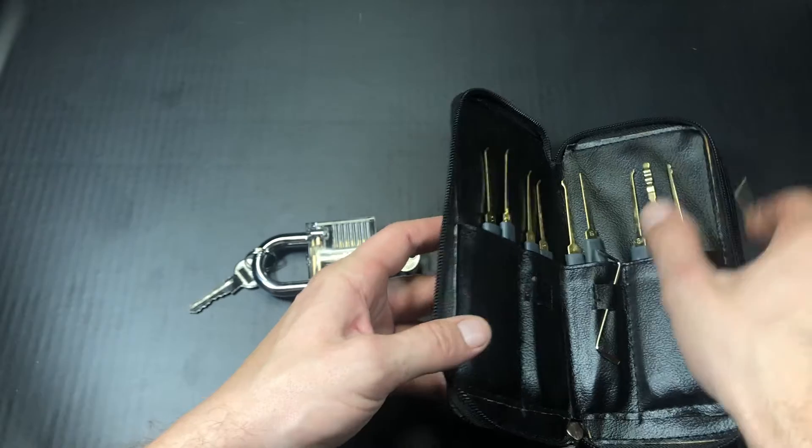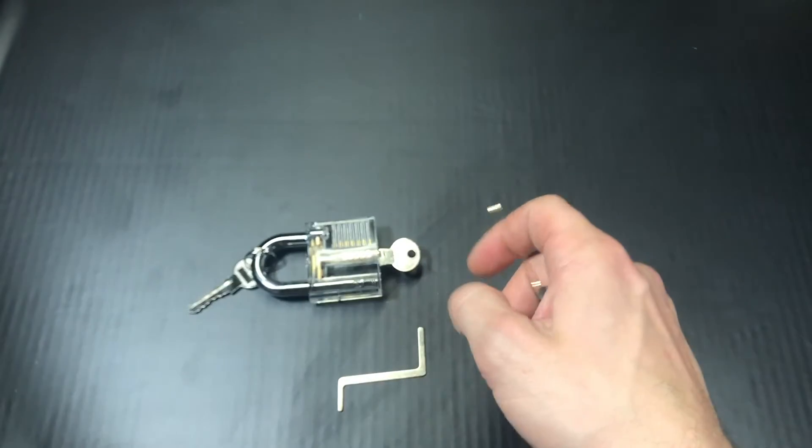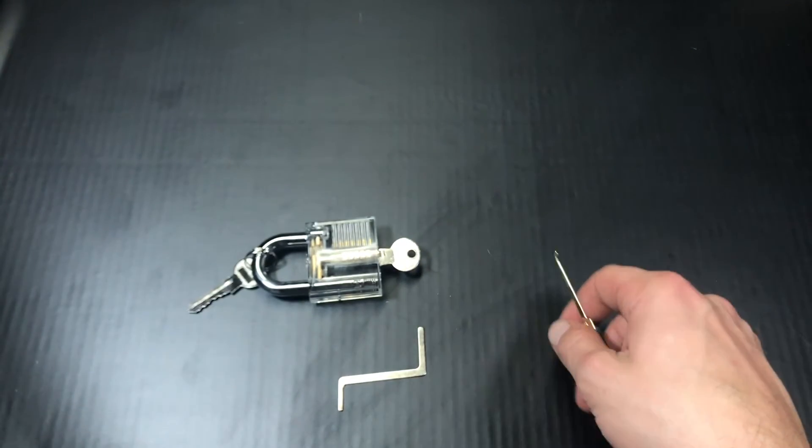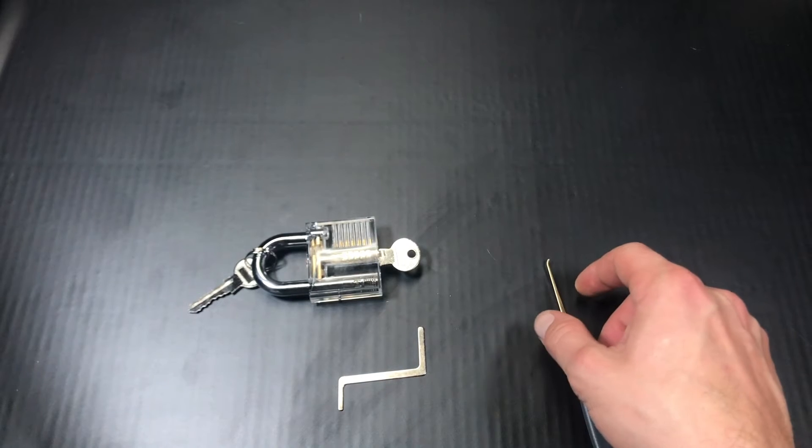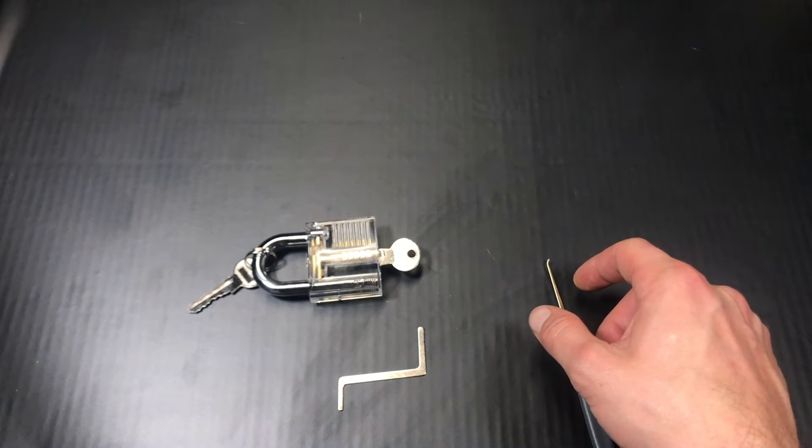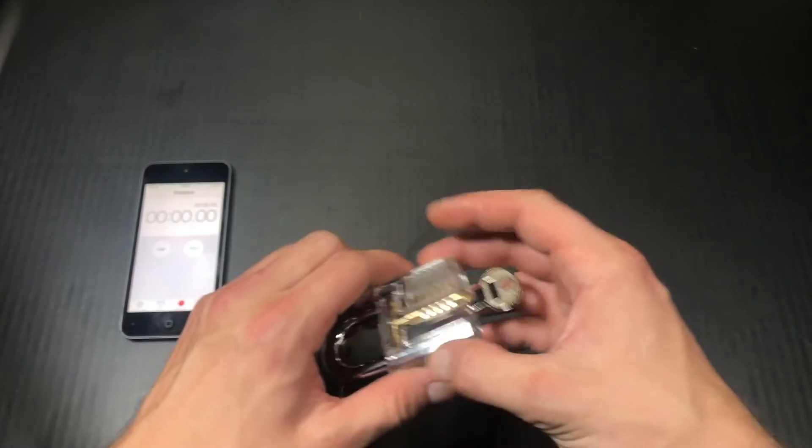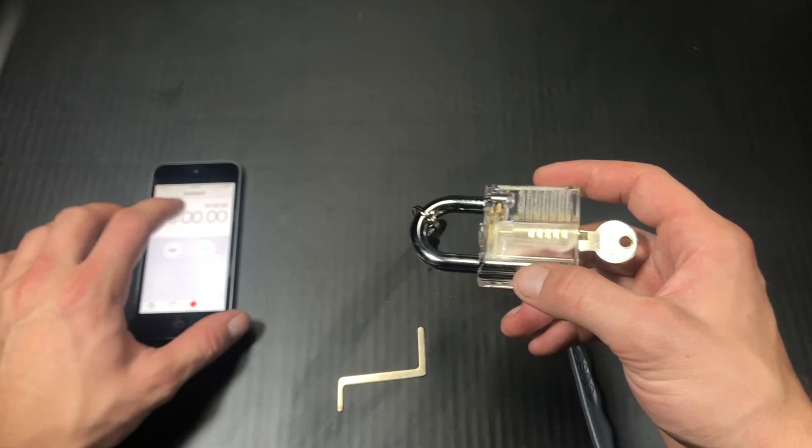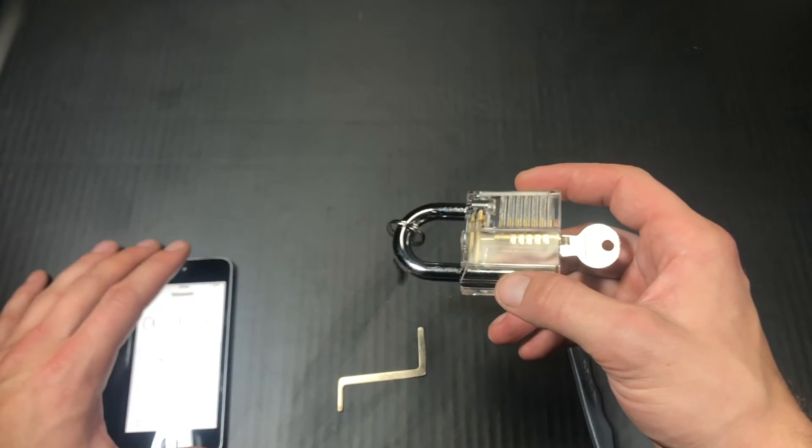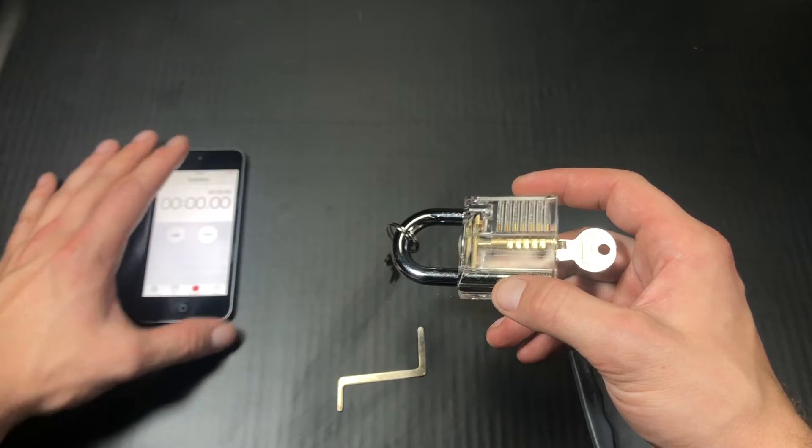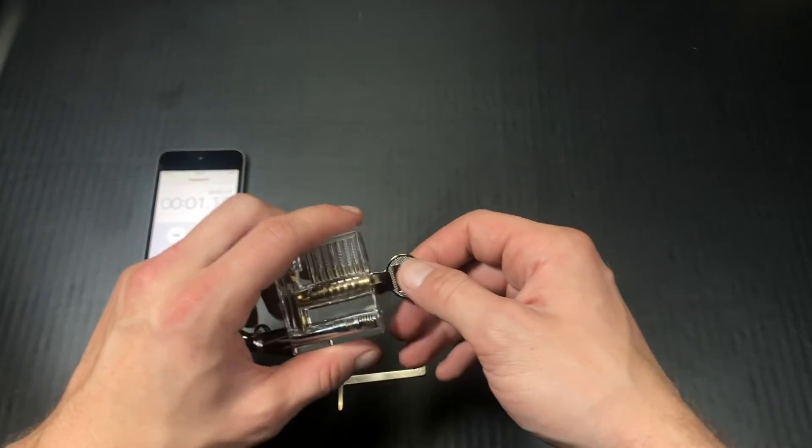So for this practice lock, I think I'm going to use this first Z bar, and we'll just start with the number one hook. Now I've watched a lot of lock picking videos, so hopefully that transfers over into actual skill. And because I am learning, why not time myself? So we're gonna hit start and let's get into it.